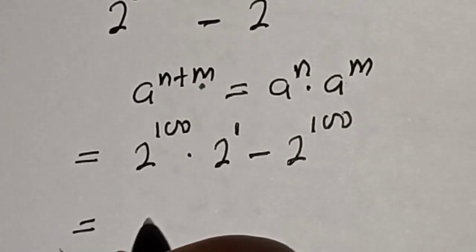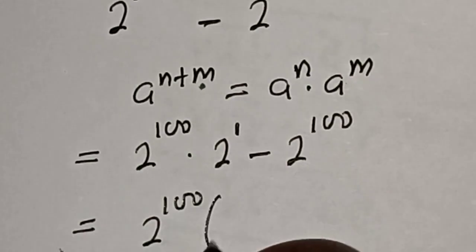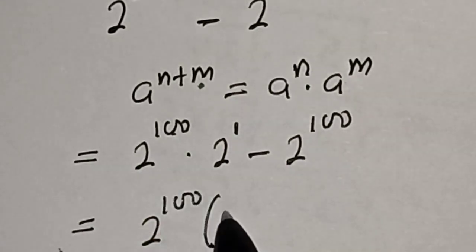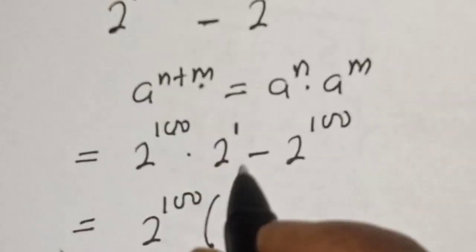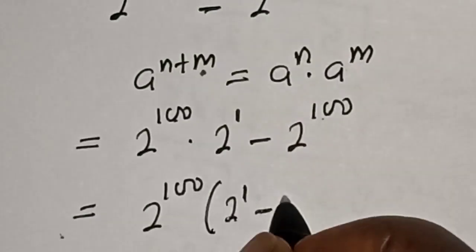2 raised to power 100 is common, so let's factor it out. We have 2 raised to power 100 times the quantity 2 raised to power 1 minus 1.